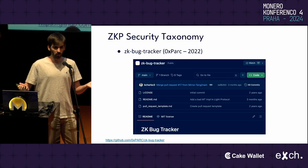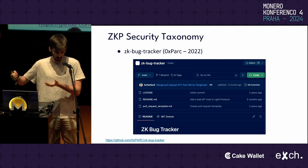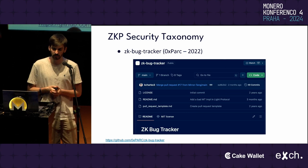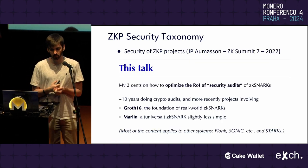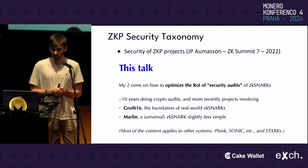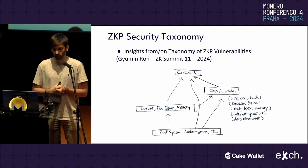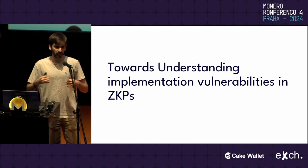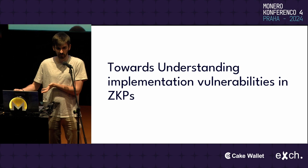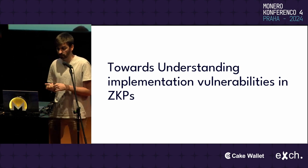There has been some work into creating a taxonomy for zero-knowledge proof security issues. One initial effort was a bug tracker on GitHub by 0xSpark. There have also been some presentations discussing taxonomies about zero-knowledge proofs — one from 2022 and another in 2024. But there hasn't been a systematic work into trying to better understand why we have these vulnerabilities and how to actually detect them. So we did that work.